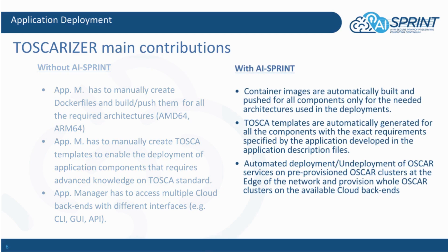But using Toscarizer, container images are automatically built and pushed for all the components, only for the needed architectures used in the deployments. Furthermore, TOSCA templates are automatically generated for all the components with the extra requirements specified by the application developers in the application description files. Finally, it automates the deployment and undeployment of OSCAR services on top of pre-provisioned OSCAR clusters and the edge, or provisions the whole OSCAR clusters on available cloud backends.